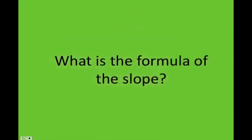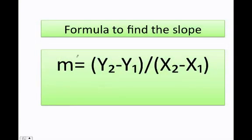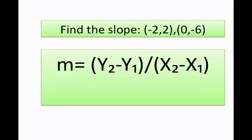How do I find the slope with the formula? The formula to find the slope is y2 minus y1 over x2 minus x1. Let's say they ask me to find the slope between these two coordinates. I need at least two points if I'm going to use the formula to figure out the slope.